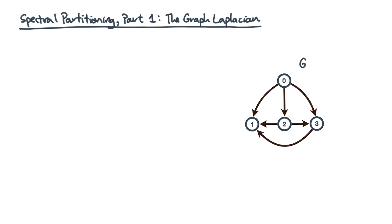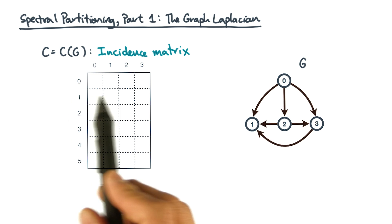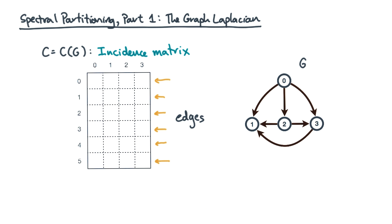Consider an unweighted directed graph such as this one. Let's call this graph G. Now, let's represent it not by its adjacency matrix, but by an incidence matrix, C of G. In this form, each row is an edge, and each column is a vertex.